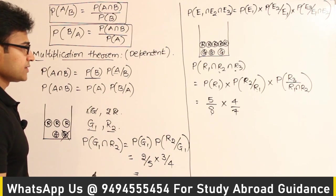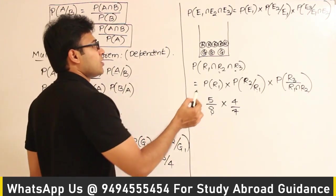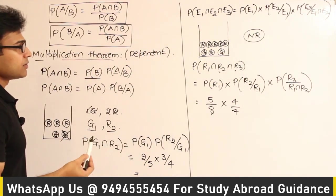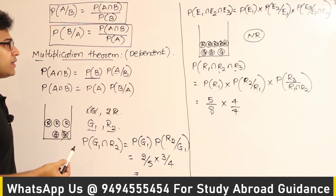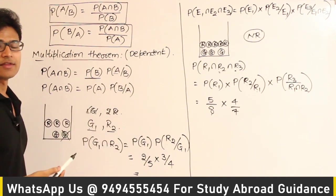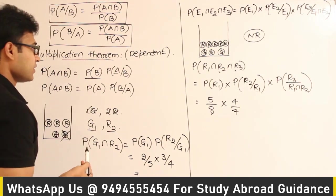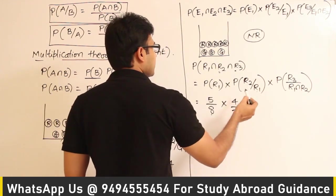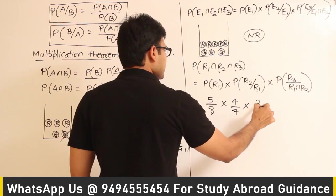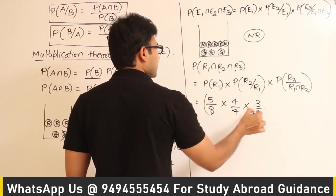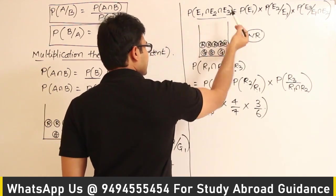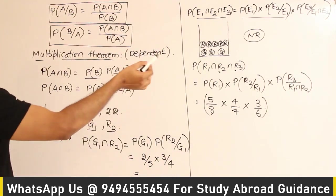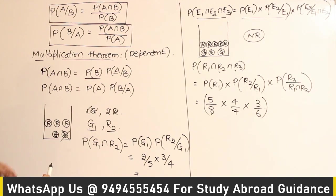The keyword here is 'without replacement.' When we do it with replacement, the events become independent. If you pick a red ball and put it back, the probability doesn't change, making them independent. But here we are not replacing, so the events are dependent. After picking the first red ball, 7 balls remain with 4 red, giving 4/7. After picking the second red ball, 6 balls remain with 3 red, giving 3/6.